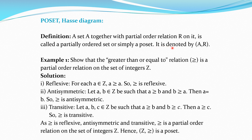A poset is denoted by (A, R) — first we write the set and then the partial order relation on that set. First example: show that the greater than or equal to relation is a partial order relation on the set of integers Z.